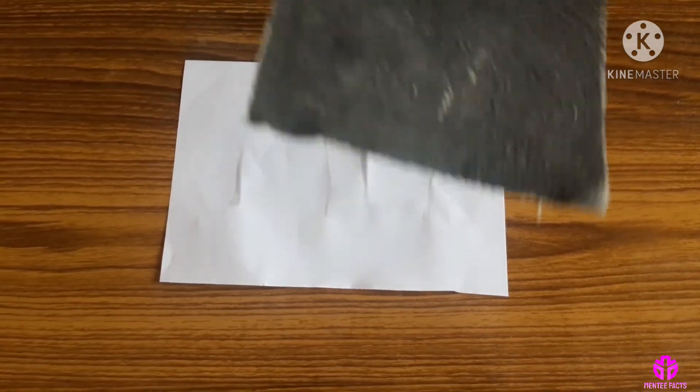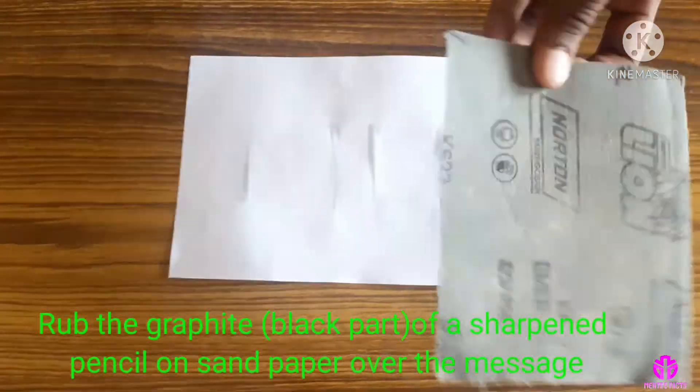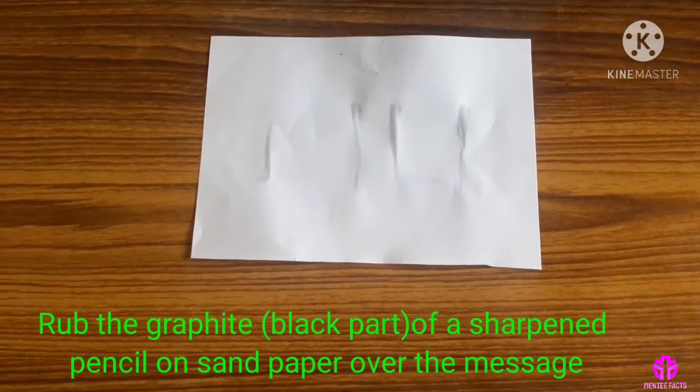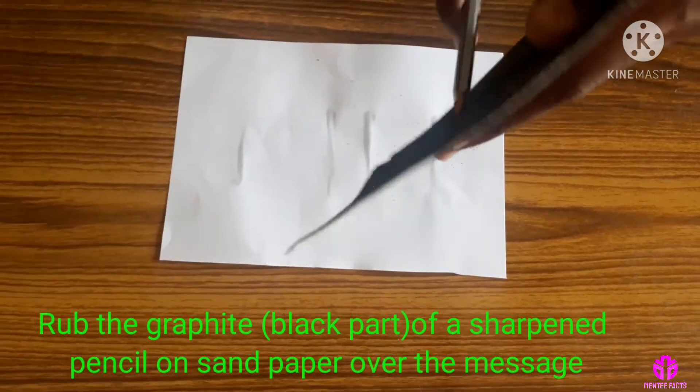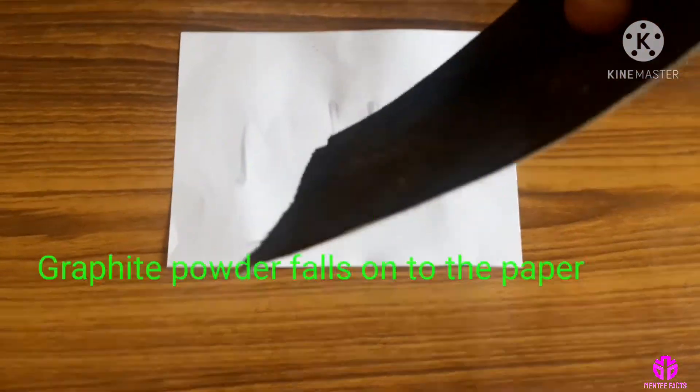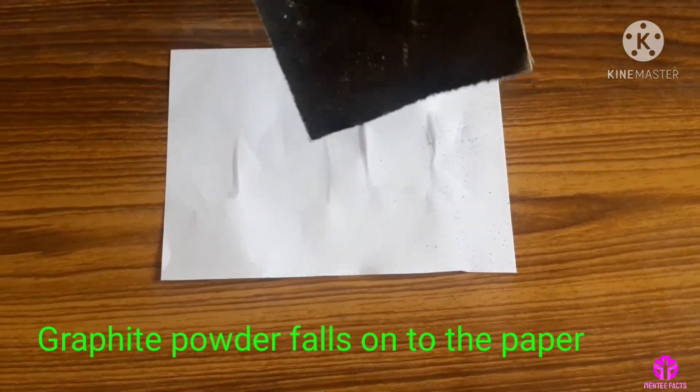Reveal the invisible message by rubbing the graphite, that is black part of a sharpened pencil on sandpaper over the message, so that a graphite powder falls onto the paper.